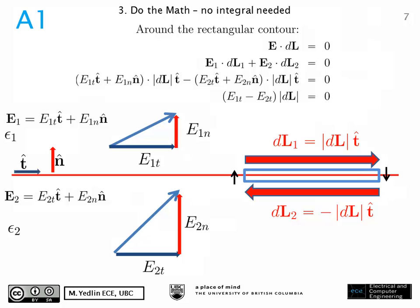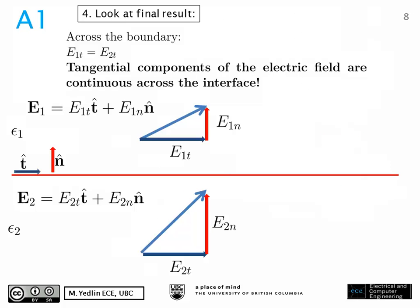What conclusion can we draw about the components of E? From the algebra of the previous slides, by doing the contour integral and reducing it to that little integral along the boundary and picking up the tangential components, we find that the tangential components of the electric field are continuous across the boundary interface. That's a very important result that will be used in many different applications, including reflection, refraction, and studying electromagnetic waves propagating across boundaries between different materials.